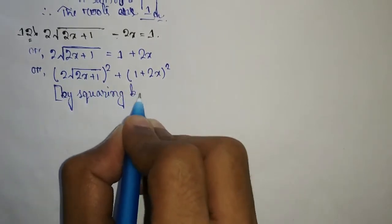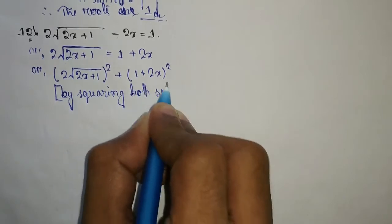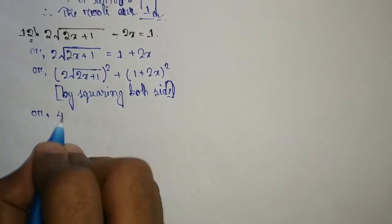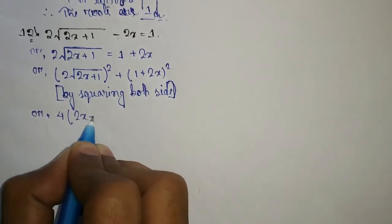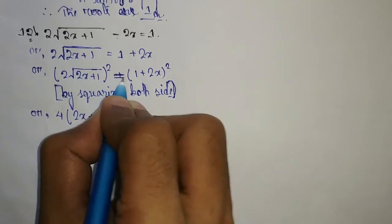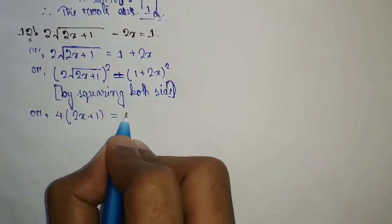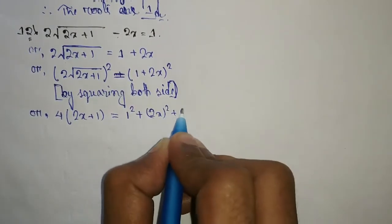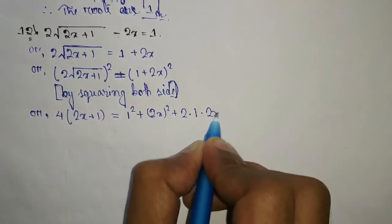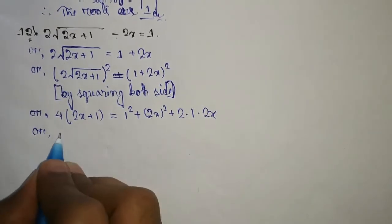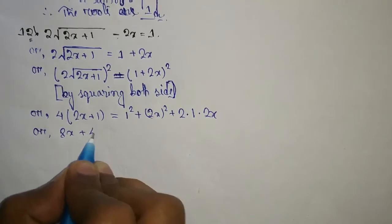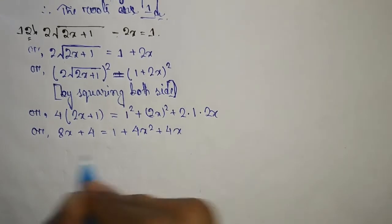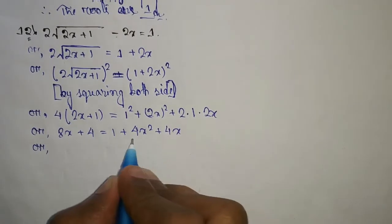After squaring both sides, using a² + b² + 2ab, we get 4(2x + 1) equal to 1 + 4x² + 4x, which gives us 8x + 4 equal to 1 + 4x² + 4x.